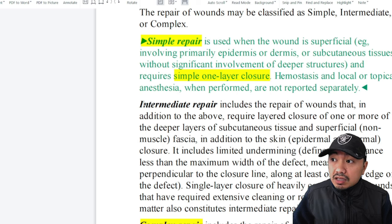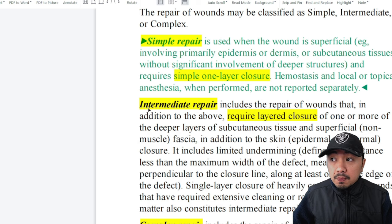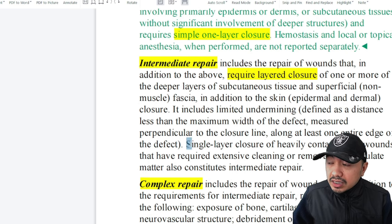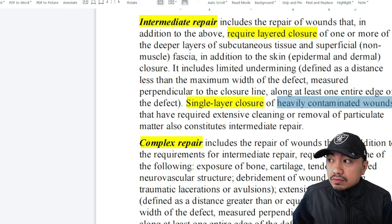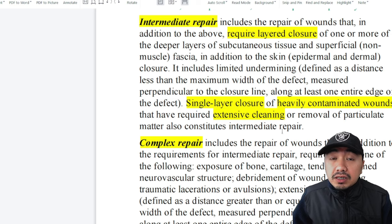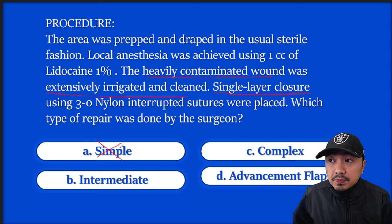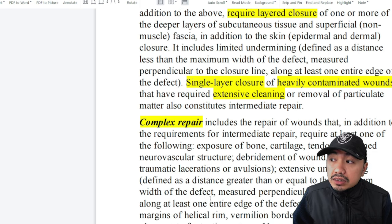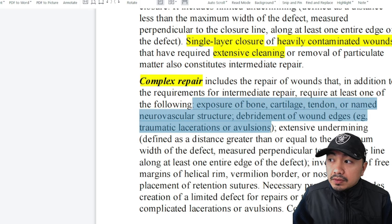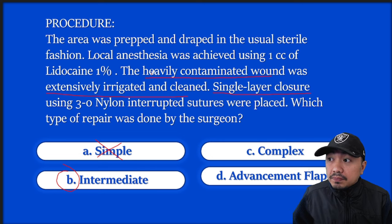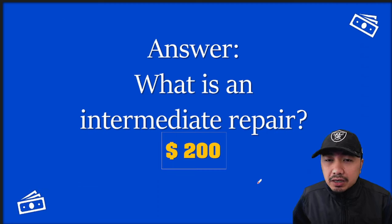The definition of intermediate repair mentions layered closure of one or more deeper layers — if it's more than one layer, it falls under intermediate repair. However, the guidelines also state that single layer closure of heavily contaminated wounds requiring extensive cleaning or removal of particulate matter qualifies as intermediate. Since the scenario mentions 'extensively irrigated' and 'heavily contaminated wounds,' it will not fall under simple repair. For complex repair, you would need additional terms like extensive undermining. So the answer is intermediate repair — congratulations for getting $200.